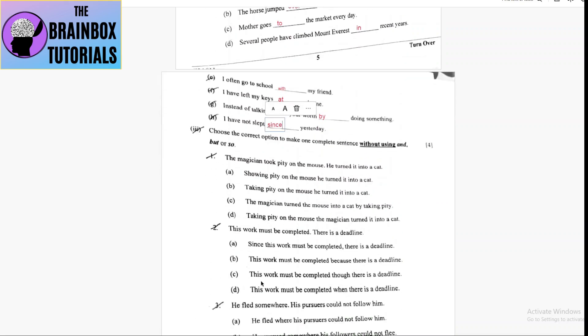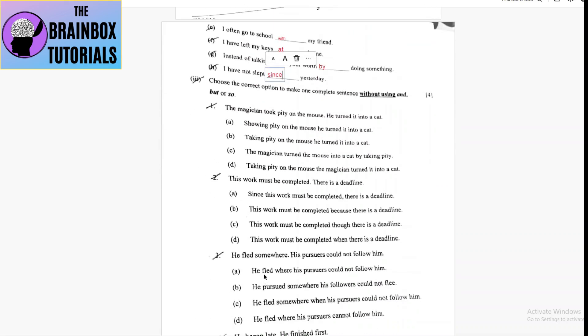Now coming to number three: complete sentences without using and, but, so. First one: the magician took pity on the mouse, he turned it into a cat. So taking pity on the mouse, he turned it. Option D: taking pity on the mouse, the magician turned it into a cat.